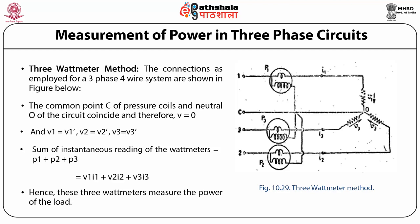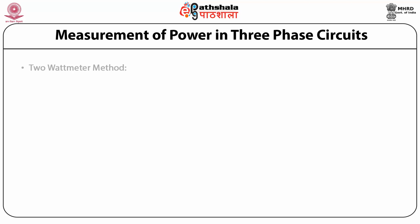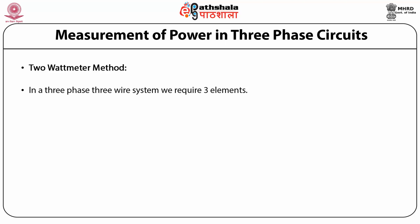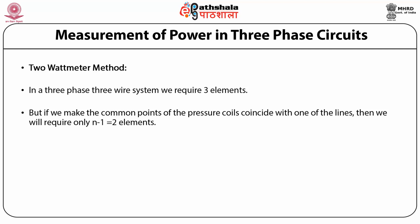Hence, these three wattmeters measure the power of the load. The second method is the 2 wattmeter method. In a 3-phase 3-wire system we require 3 elements, but if we make the common point of the pressure coils coincide with one of the lines, then we require only N−1 equal to 2 elements. The instantaneous power consumed by the load is given by V1I1 plus V2I2 plus V3I3.